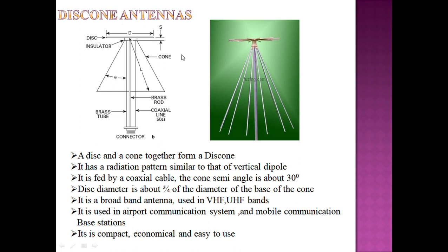The discone antenna is shaped like a disc and a cone combined. The radiation pattern is similar to that of a vertical dipole. The semi-angle of the cone is about 30 degrees. The diameter of the disc is three-fourths of the diameter of the base of the cone. It is a broadband antenna and can be used in HF, VHF, and UHF bands. It is used in airport communication systems and mobile communication base stations. It is very compact and economical.